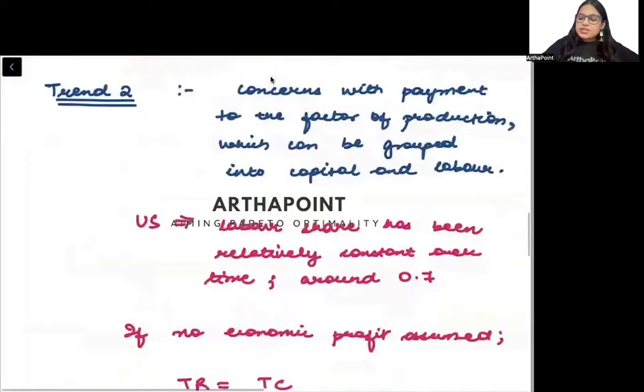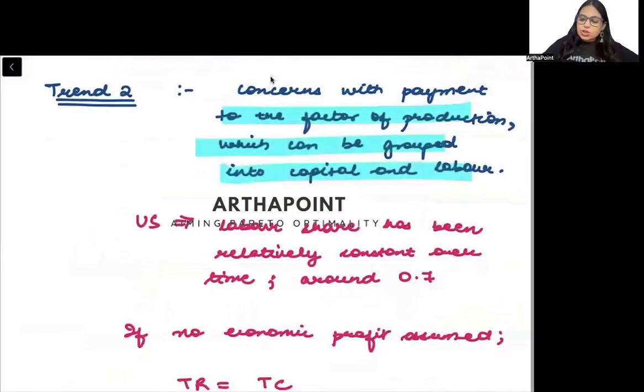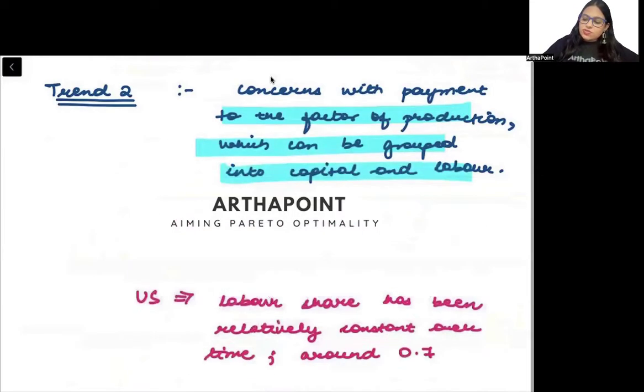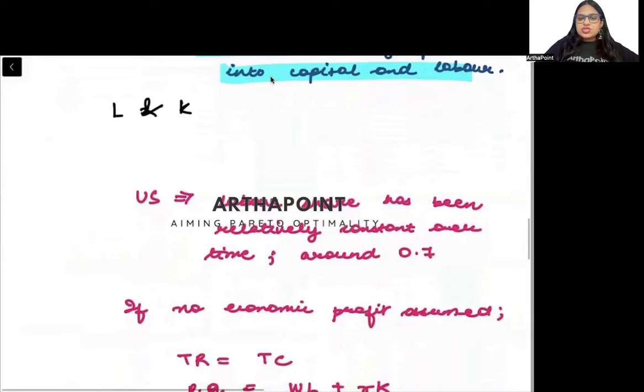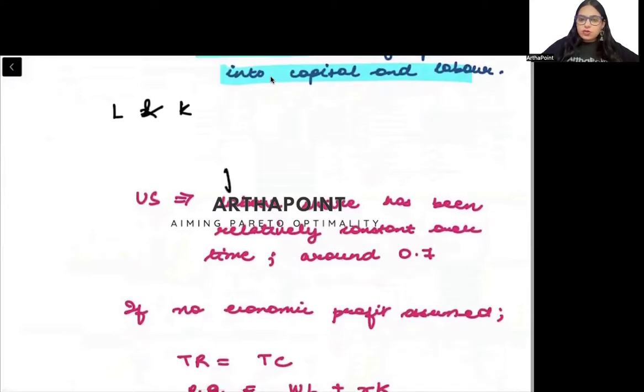Now, look at the second part. Second part is saying that the concerns to factor of production. Let's say that there are two factors of production, labor and capital. Let us try to see the share of labor in US. It has been seen that the share of labor in US has remained constant at 0.7.